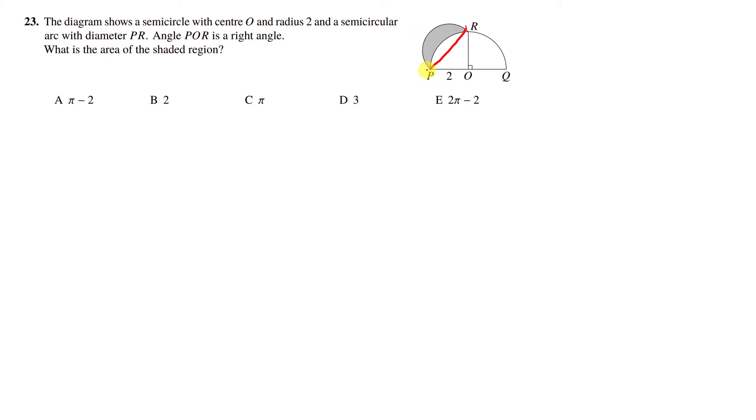Because now what we have is we have this semicircle here, I'm going to call it A. And we want to subtract this shape here, which I'll call B. We want to subtract this shape here. So we can find the area of A. But first we need to find its diameter. So we have this triangle here.